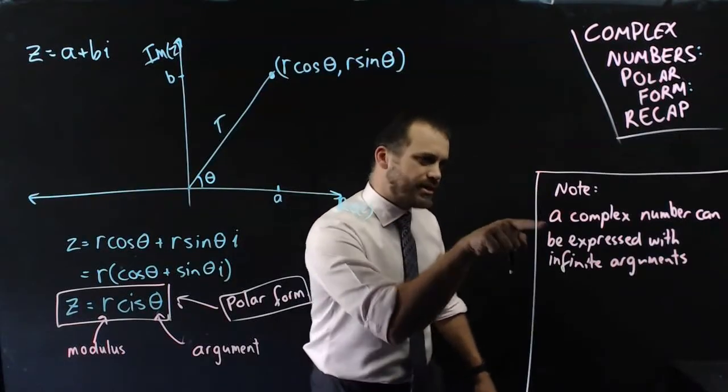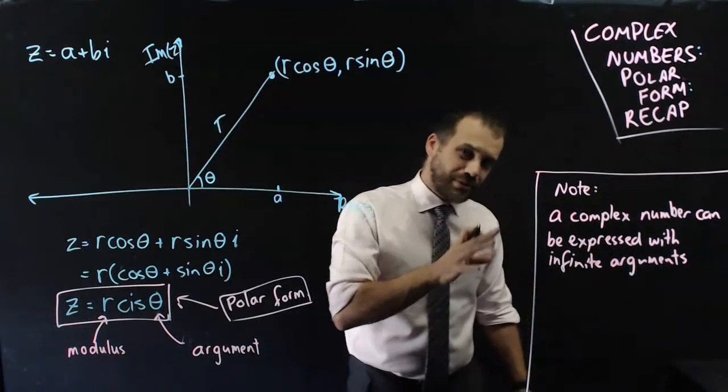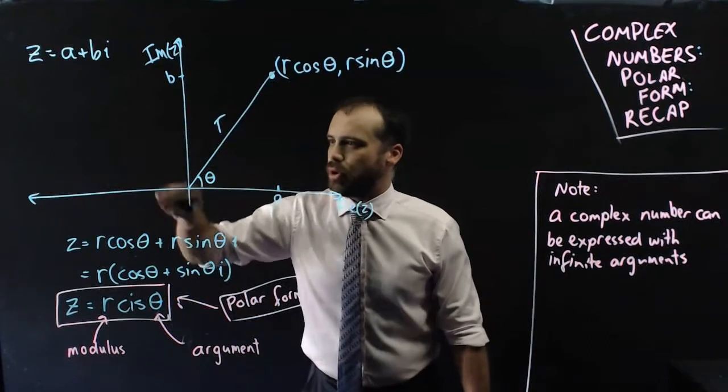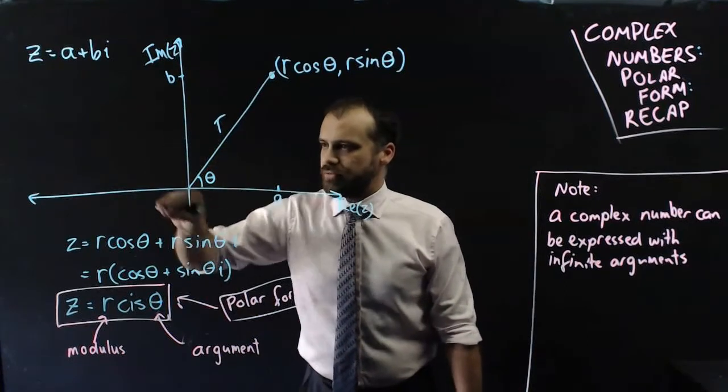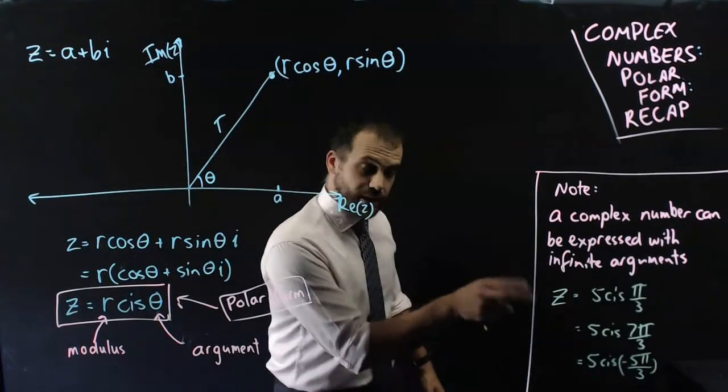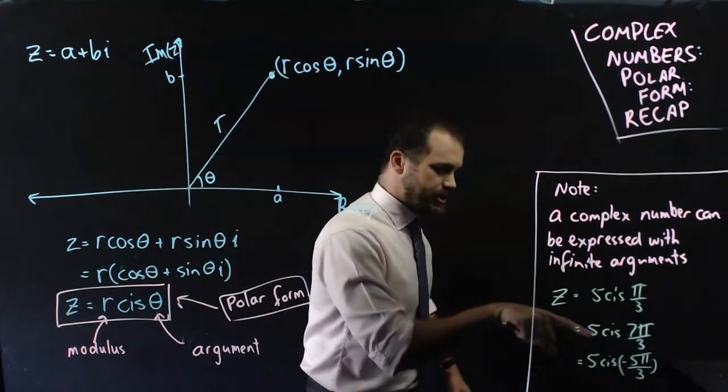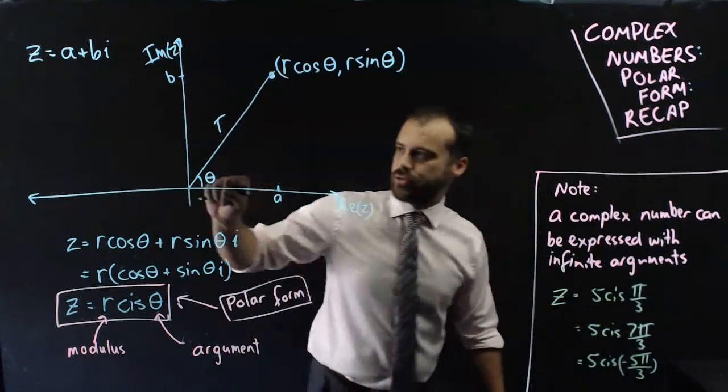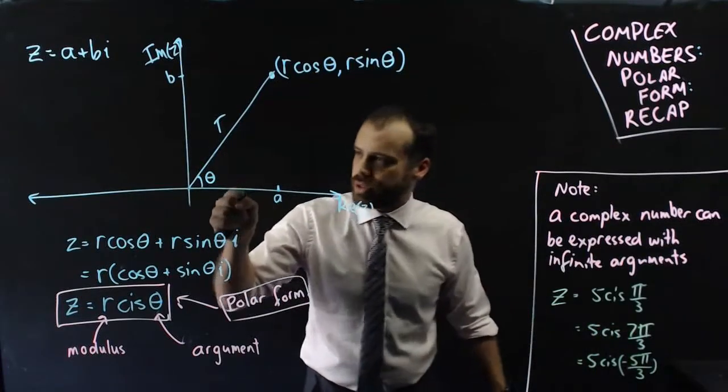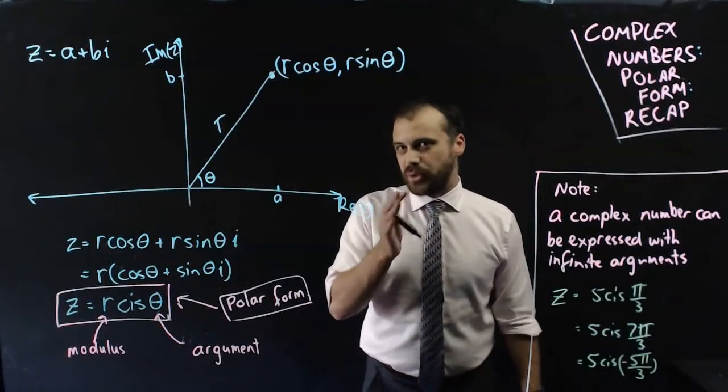Now an important thing to note here is that a complex number can be expressed with infinite arguments. Because this angle here could be this, but it could also be 2 pi plus this, it could also be 4 pi plus this, it could also be starting here and moving negative. That is, if you had a complex number 5 cis pi on 3, that would be the same as 5 cis 7 pi on 3. It would also be the same as 5 cis negative 5 pi on 3.